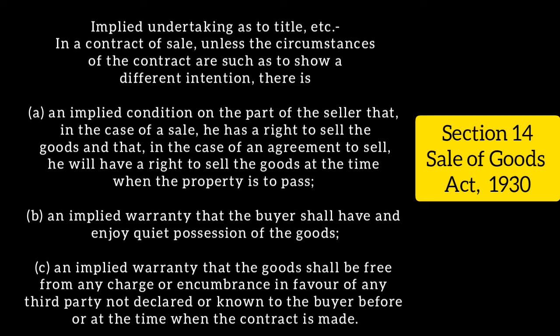Clause (c) of Section 14 states that there is an implied warranty that the goods shall be free from any charge or incumbrances in favor of any third party not declared or known to the buyer before or at the time when the contract is made.